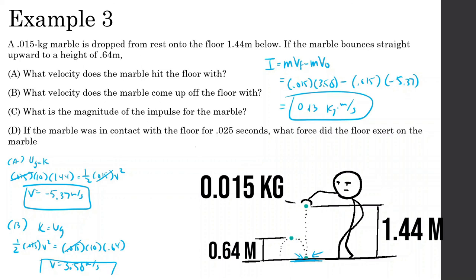Part D: the marble is in contact with the floor for 0.025 seconds. What force did the floor exert? Impulse equals force times time, so force equals 0.13 divided by 0.025, which gives 5.2 newtons.